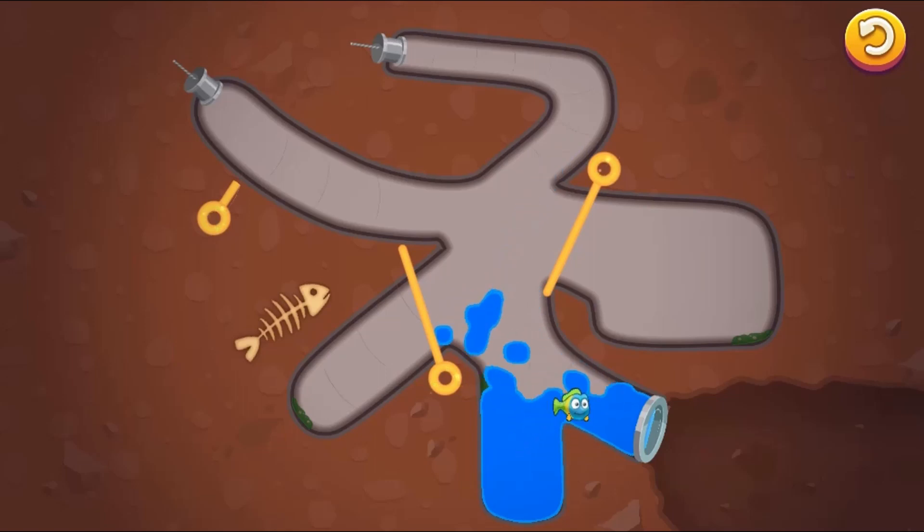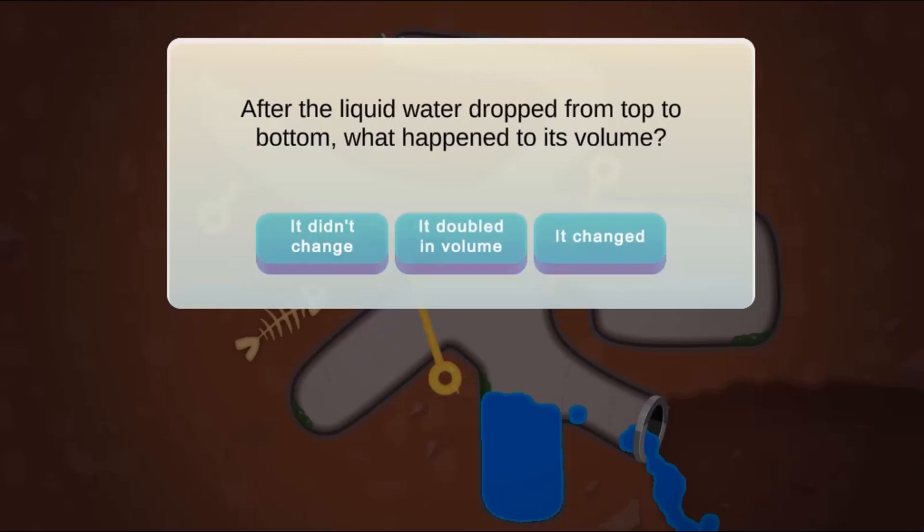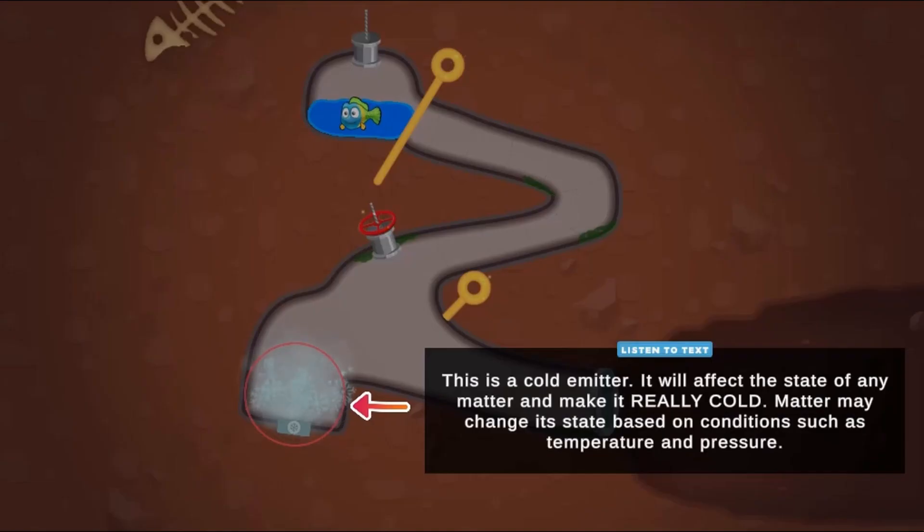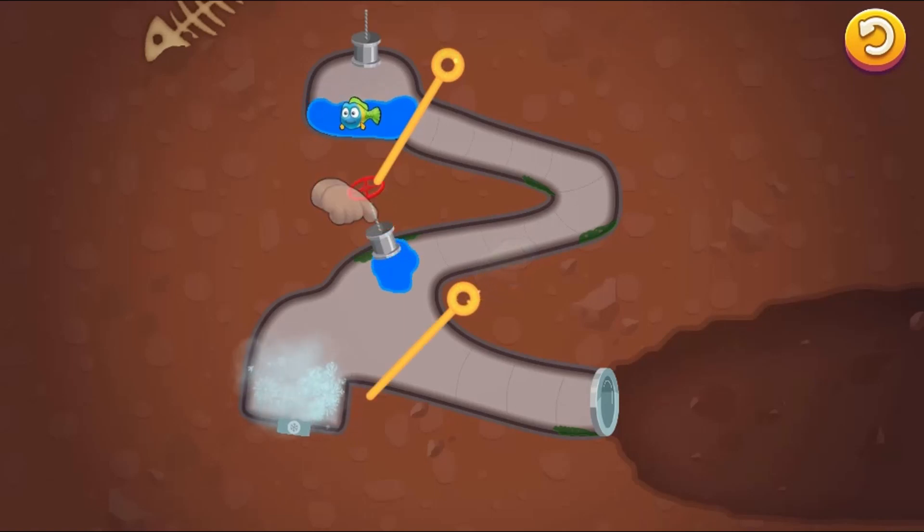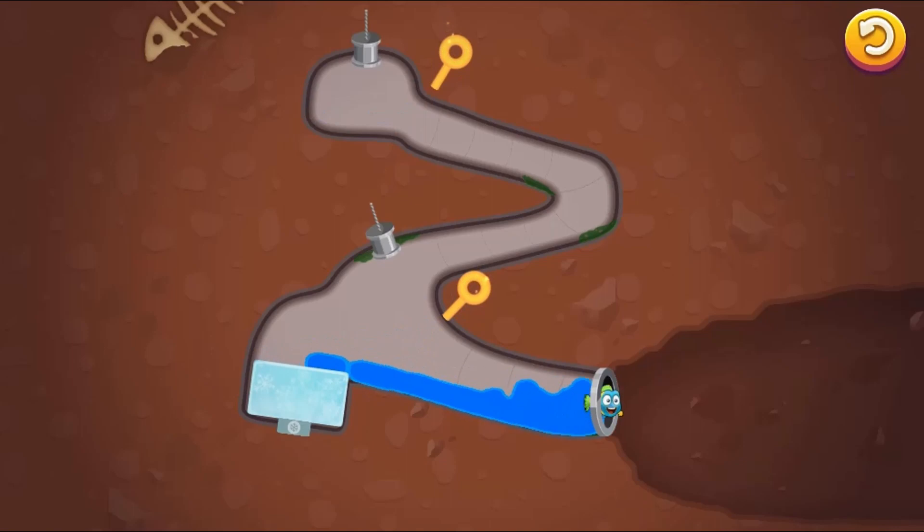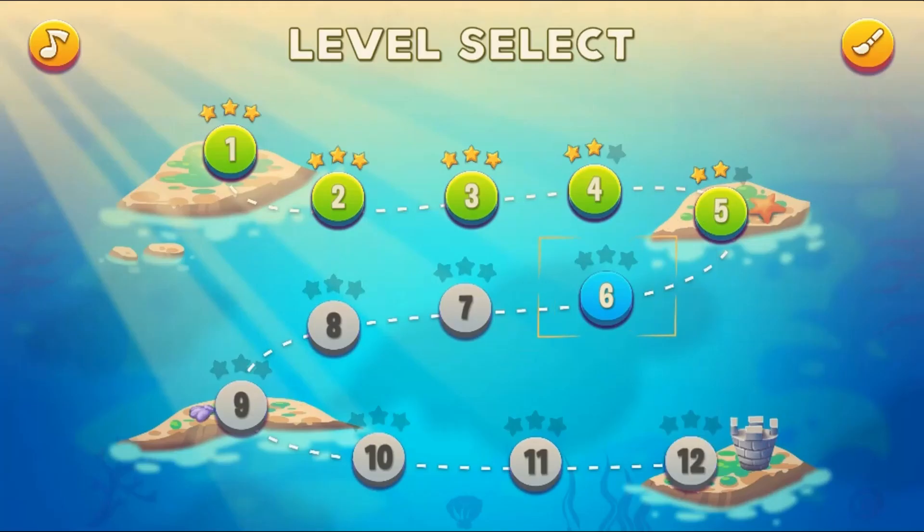Use the mouse to click and remove or insert pins to direct water in a pipe. Different levels have different challenges involving heat or cold. Water can be evaporated or frozen.